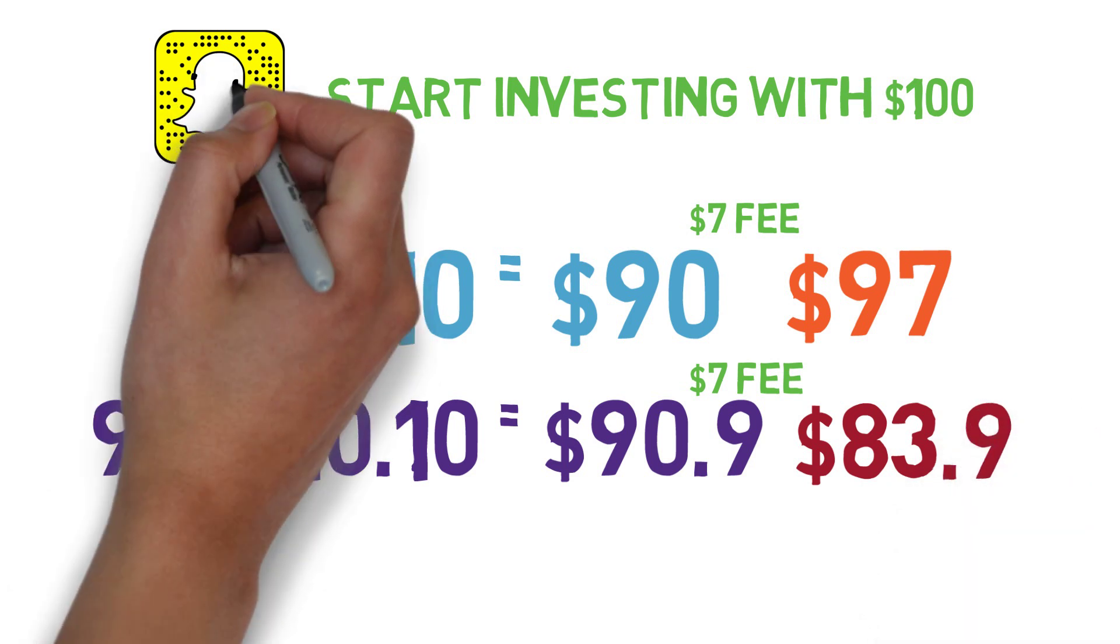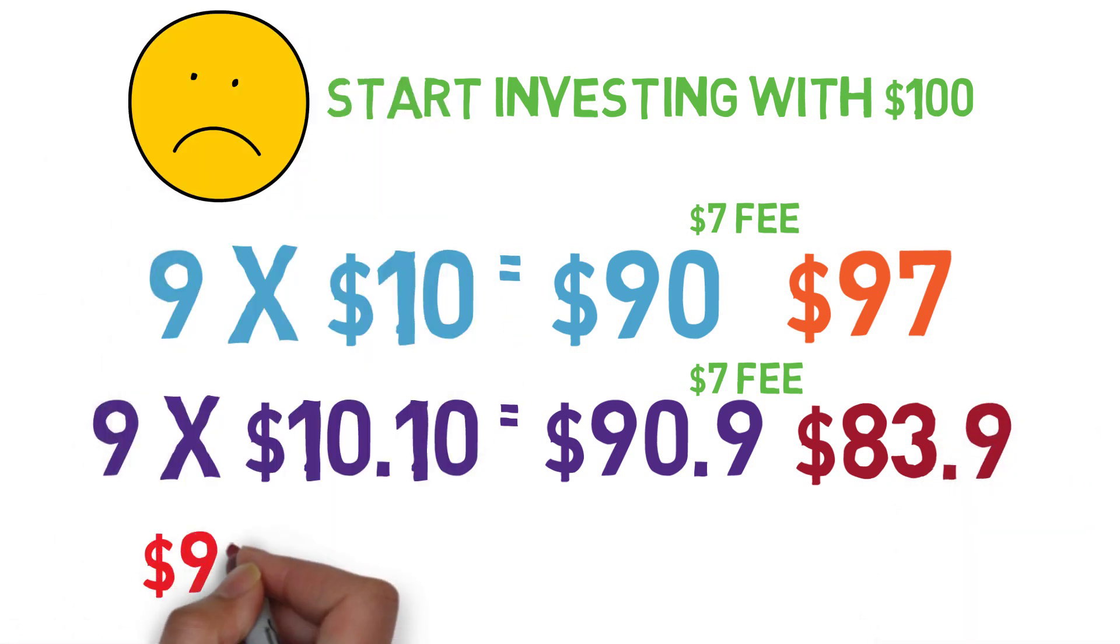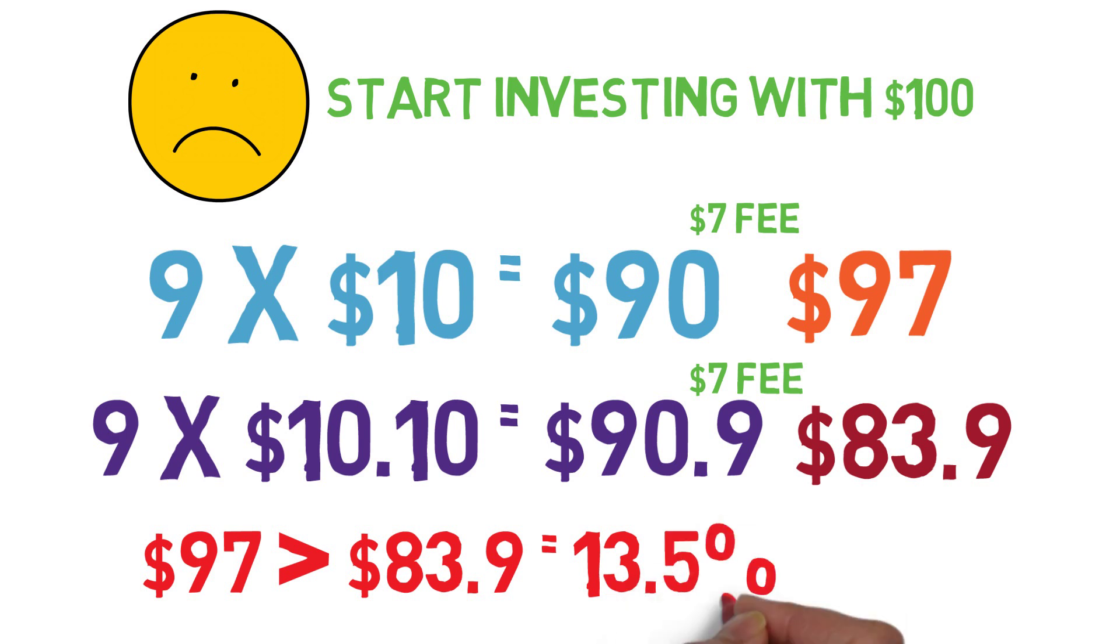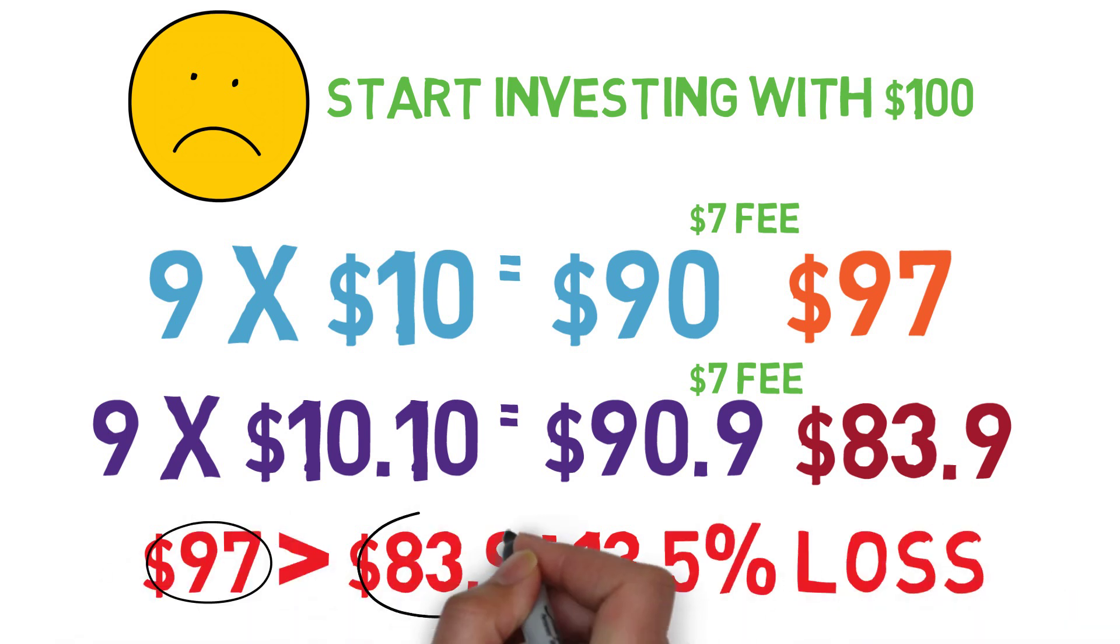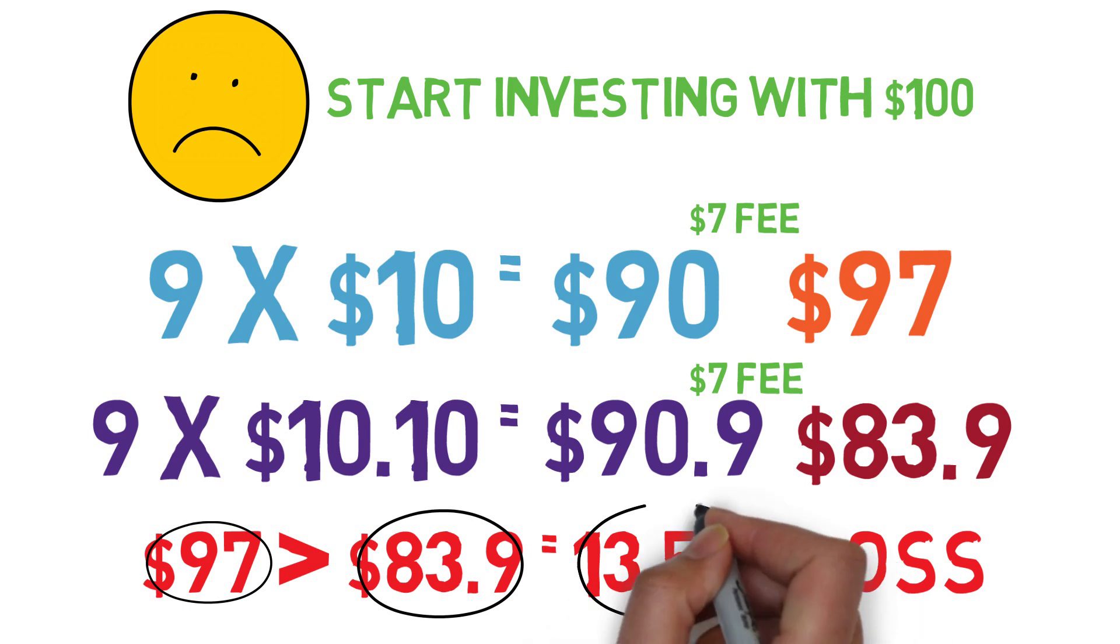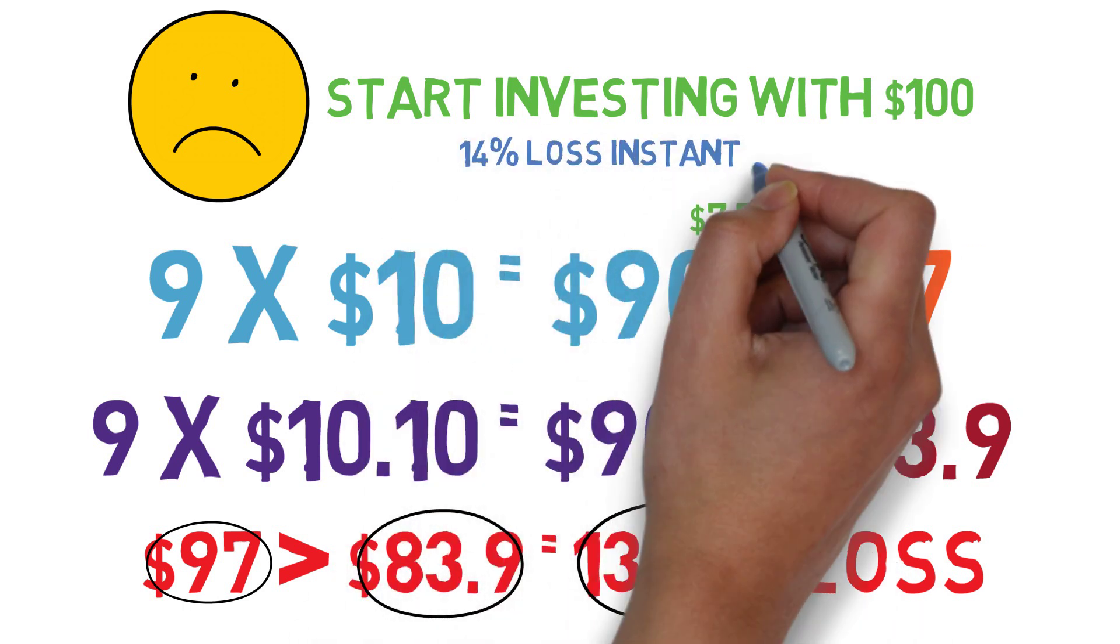Selling 9 shares at that price means you get $90.90, plus you have to pay $7 out of that money, giving you $83.90. Your $97 turned into $83.90, a 13.5% loss. A loss of 14% straight away if you decided to buy stocks with only $100.